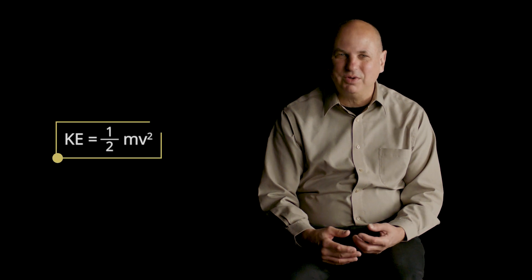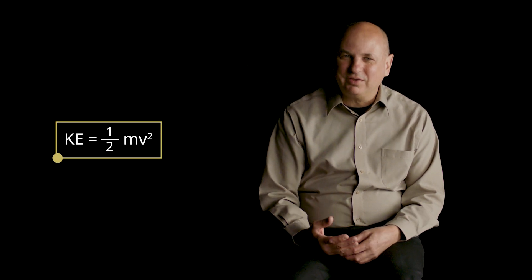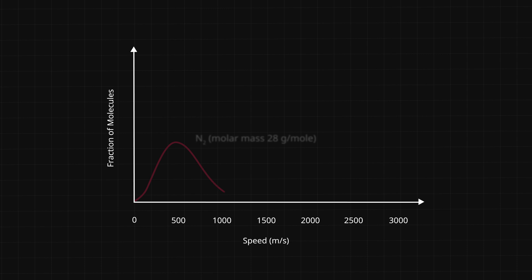Mass doesn't matter for kinetic energy. But the relation between kinetic energy and speed does involve the mass of the particle. Kinetic energy is one-half mv squared. So when we switch the x-axis from kinetic energy to speed, we do see a large difference. Helium is less massive than nitrogen, so it must move a lot faster to have the same kinetic energy as nitrogen.